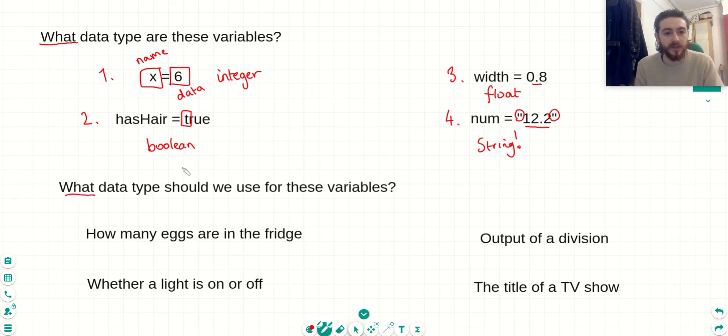Next, let's have a quick look at what data type should we use for these variables. So let's go through the first one. I want to store how many eggs are in my fridge. Now, I don't know about you, but I only have a whole number amount of eggs in my fridge. So I think this should be an integer because you can't have half an egg.